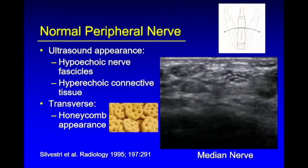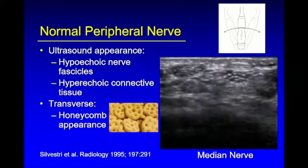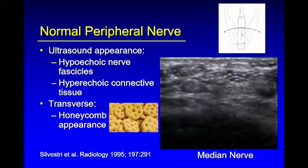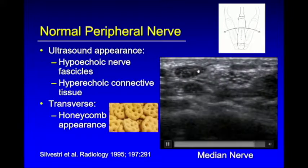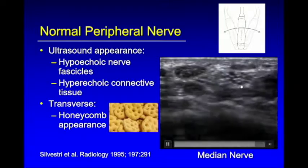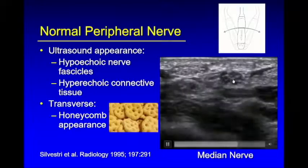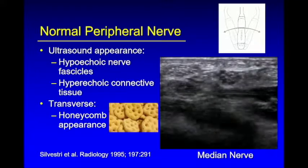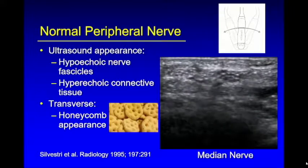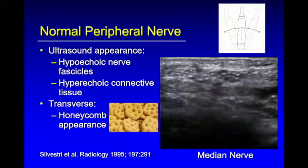As you move the transducer proximal to distal, you'll appreciate the tubular configuration of the structure. Looking at the carpal tunnel, I'm toggling the transducer to bring out anisotropy of the tendons. Anisotropy also involves the nerves, but to a much lesser degree because the nerve is already hypoechoic — it's really the echogenic epineurium that decreases with anisotropy. By toggling the transducer, you can bring out these echogenic layers to show that honeycomb appearance.